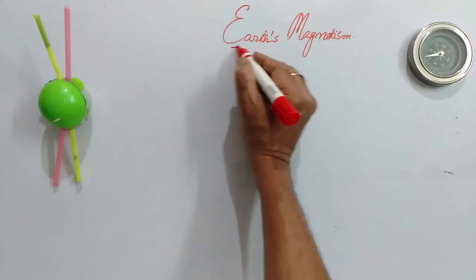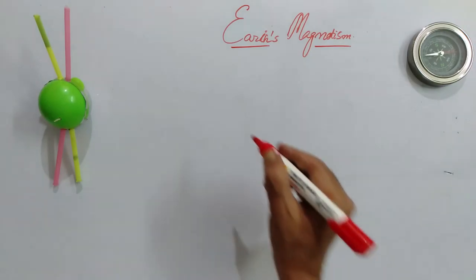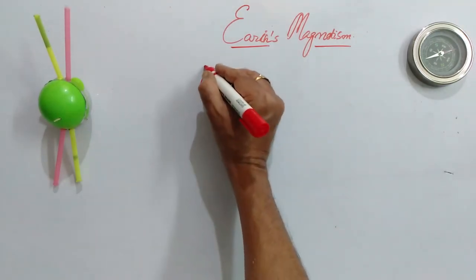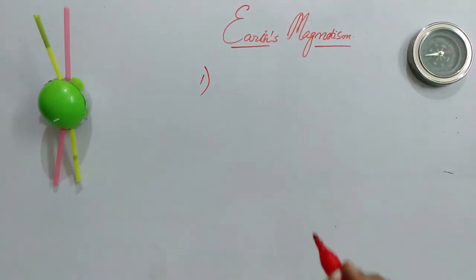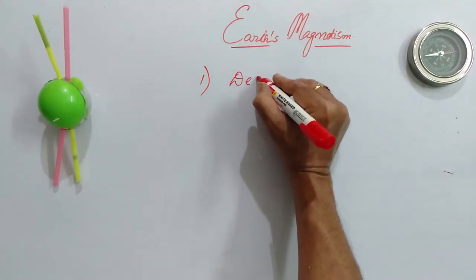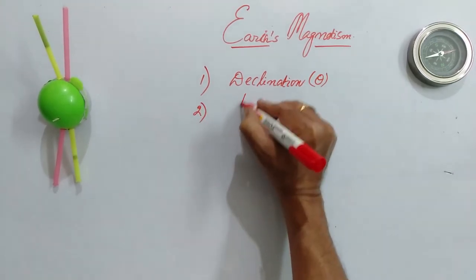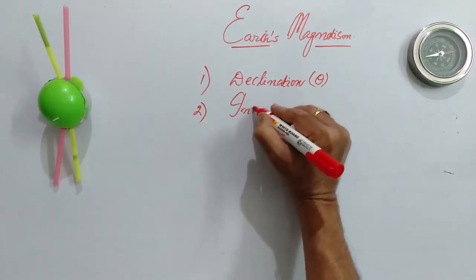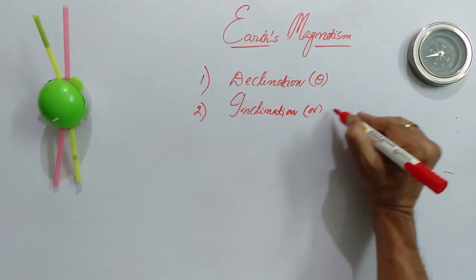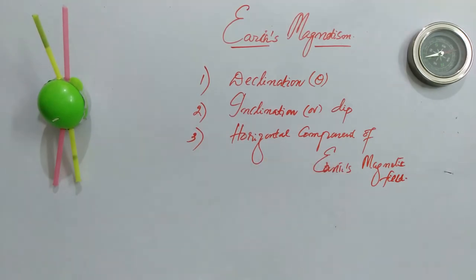Let's talk about Earth's magnetism. To understand Earth's magnetism, you must study three elements: the first one is declination, the second is inclination — also known as dip — and the third one is the horizontal component of Earth's magnetic field. Let us discuss them one after the other.